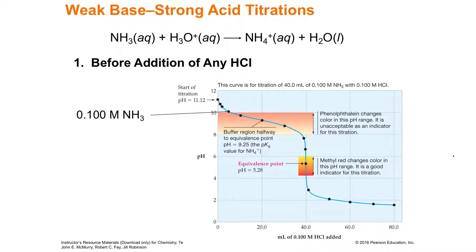If you go backwards — instead of a base in the burette and acid in the jar, you put a base in the jar — you're going to start at really high pH. Then as you add acid, it's going to drop and you're going to get a low pH. So it's essentially the opposite curve of what you'd get if you started with the acid.